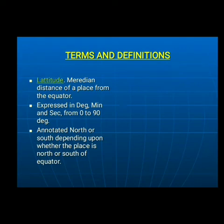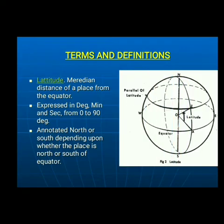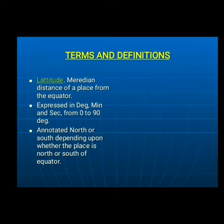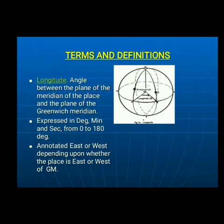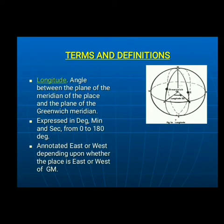Latitude: meridian distance from the equator, represented as angles indicated by north or south in relation to the equator. Longitude: the angle between a meridian and the Greenwich meridian, expressed in angles indicated by east or west relative to the Greenwich meridian.